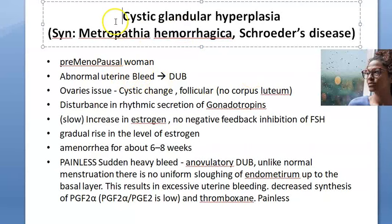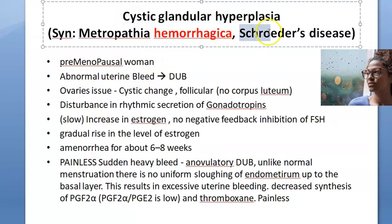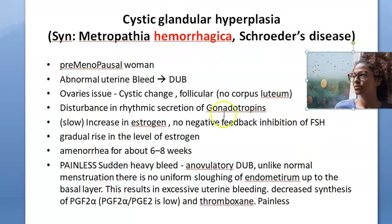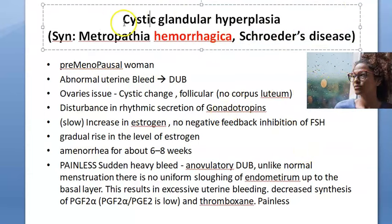In this video we want to look at the topic Metropathia Hemorrhagica, which they can ask in the exam. They can also ask it as Cystic Glandular Hyperplasia or Schroeder's disease. So what is Metropathia Hemorrhagica? There is abnormal uterine bleeding here.